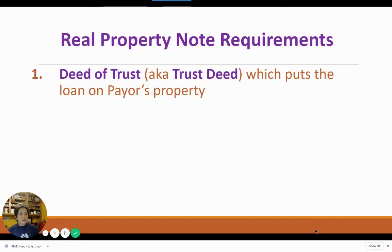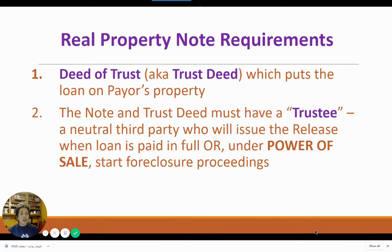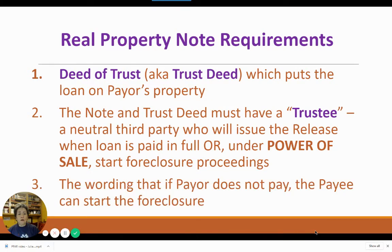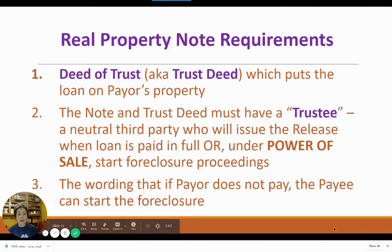When the note is backed by real property, there are certain conditions under California law. You've got to have a deed of trust and a trustee — this secures the loan on the payor's property. The note and the deed of trust must have a trustee, the neutral third party who will issue the reconveyance when the loan is paid, or under its power of sale, start the foreclosure proceedings. The wording for those proceedings in case the payor does not pay must be put inside the trust deed — that wording has to appear on the form.